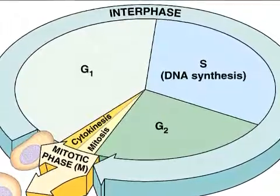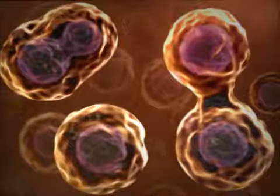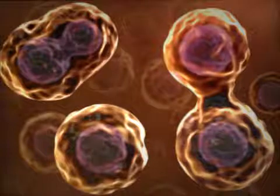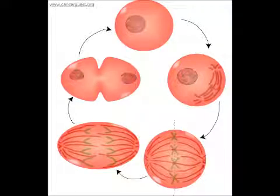In animals, each centrosome contains a pair of centrioles. Cell division consists of two phases: nuclear division followed by cytokinesis. Mitosis divides the nucleus so that the daughter cells are genetically identical. It is important because it is a main source of growth for many organisms, and it is used to repair most physical injuries that multicellular organisms incur.